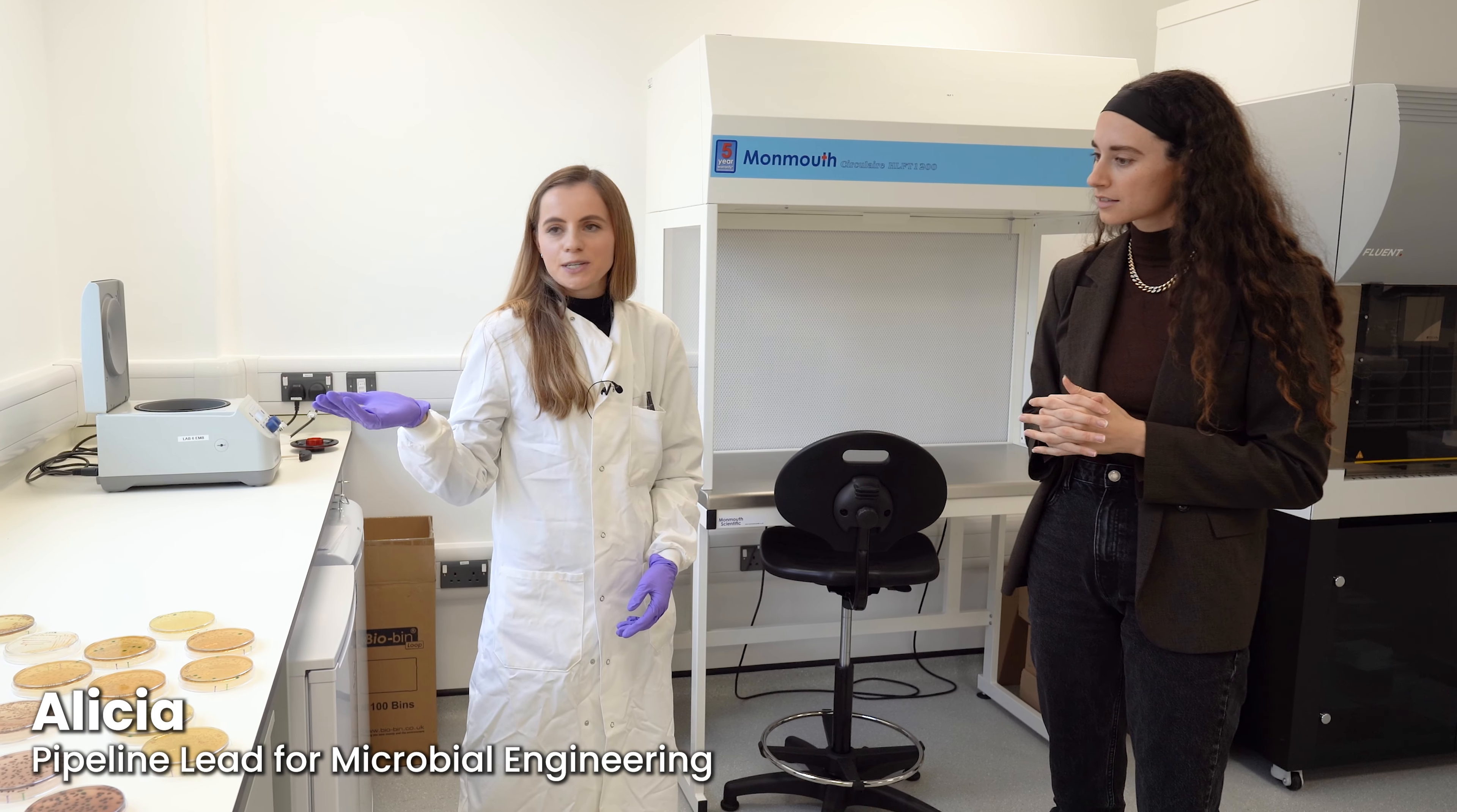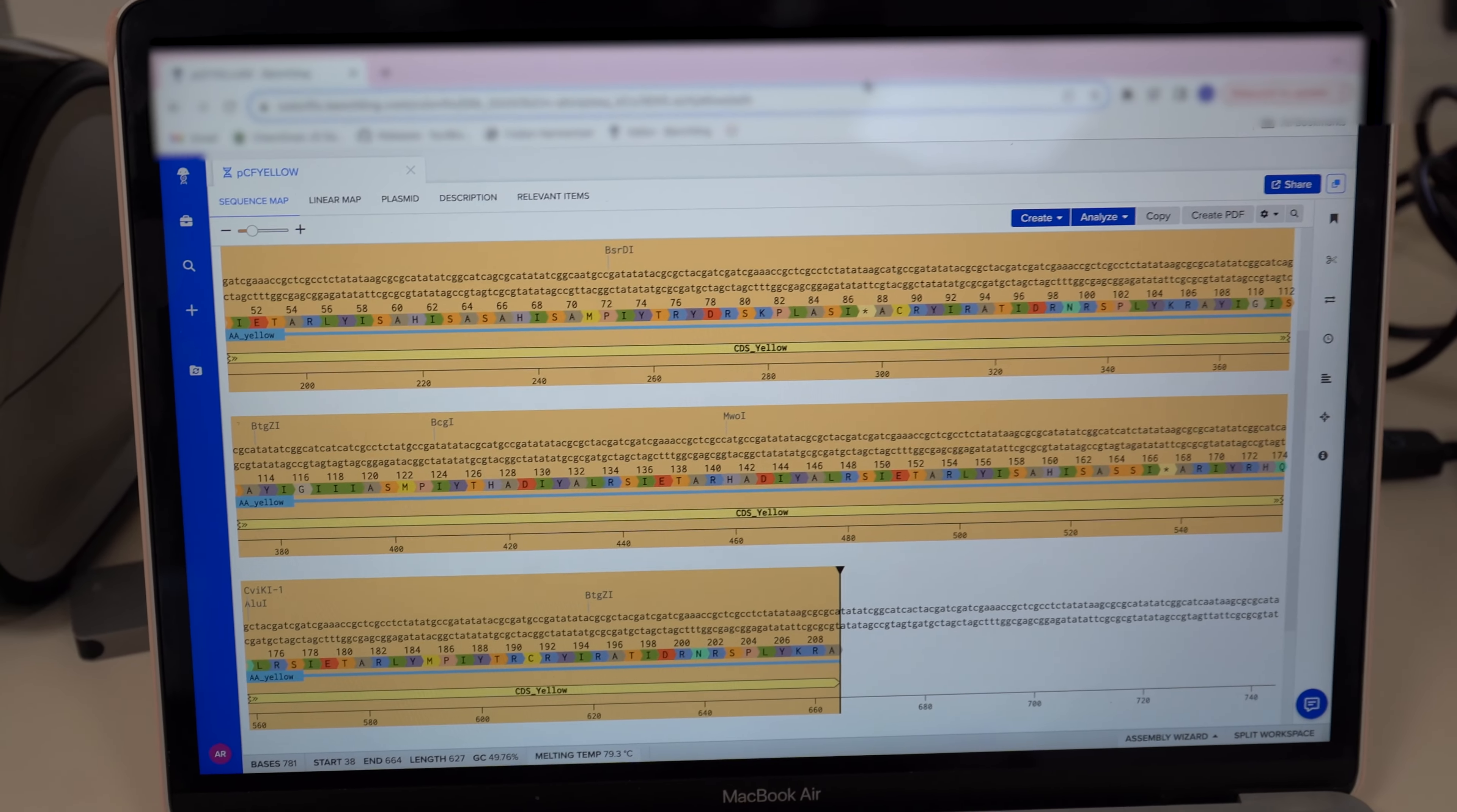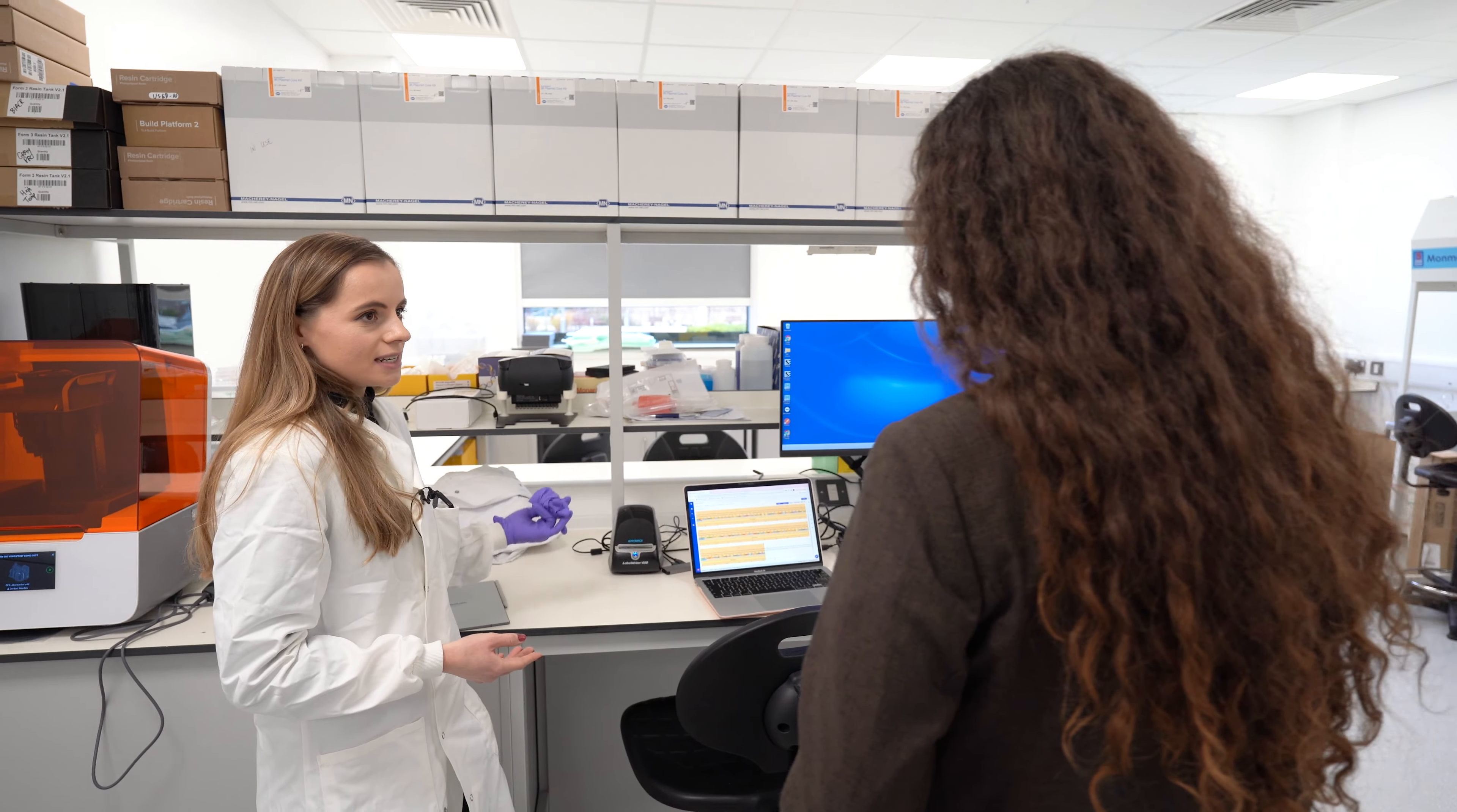We start with taking inspiration from nature to decide what kind of colors we find in nature that we could reproduce in our systems. We'll try and identify the genetic code which encodes the biosynthesis of the pigments we're trying to create. We'll put that DNA into our host microorganisms so that they can express the exact same pigments that we see in nature.